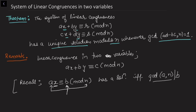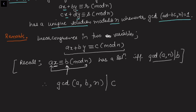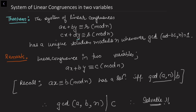By analogy, for the single congruence in two variables ax + by ≡ c (mod n), we need gcd(a, b, n) to divide c — because we have the coefficient of x, the coefficient of y, and the modulus n; their gcd should divide c. If this condition holds, then the linear congruence in two variables is solvable.